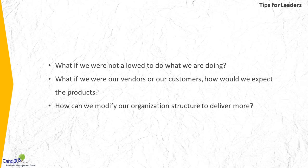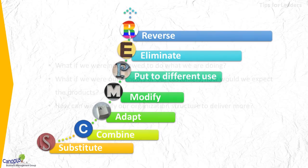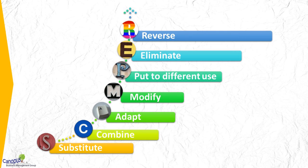At this point, I want to highlight an important aspect of SCAMPER. The objective of these principles or stimuli is just to trigger you — to trigger you to think in a particular direction. Don't be worried if you get an idea from 'Adapt' but the same idea for a colleague came from 'Modify.' It doesn't really matter. The idea of using these triggers is simply to stimulate you to think in a particular direction — that's all.